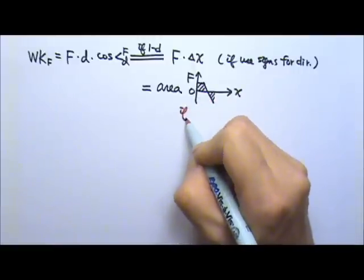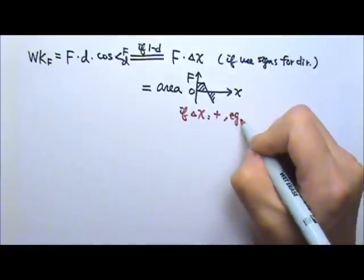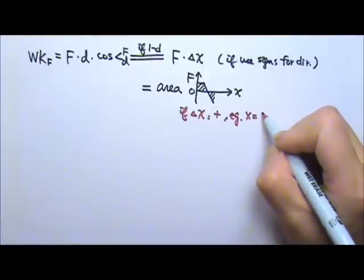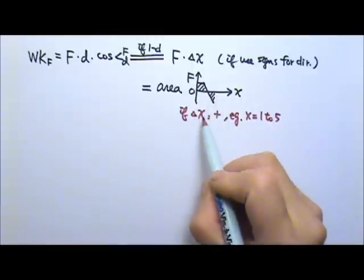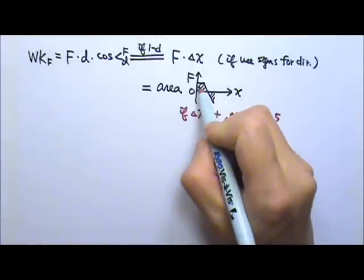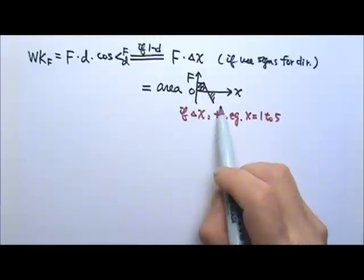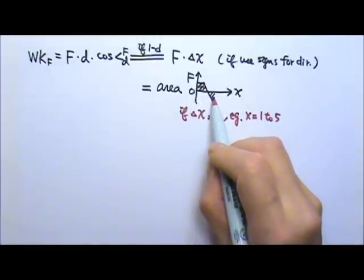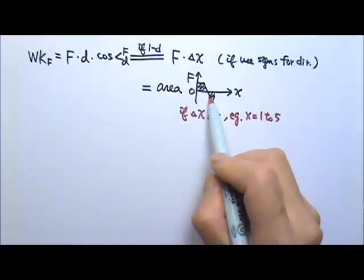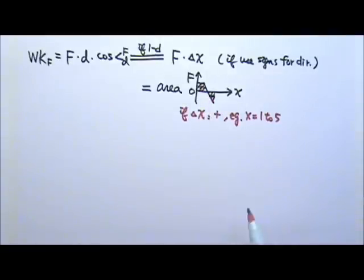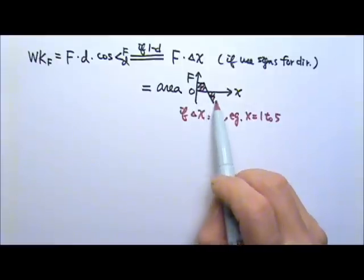This part can be a little tricky. If your displacement is in the positive x direction — for example, going from x = 1 to x = 5 — then the positive force is in the same direction as the displacement, giving positive work. The area below the axis involves negative force, which is opposite to the displacement, so that area gives us negative work. To find the total work done, you add the positive area to the negative area.